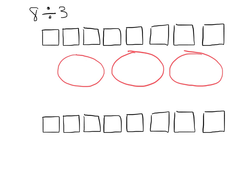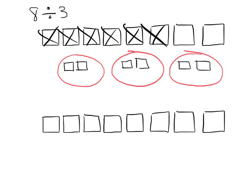And we can see that, first off, we can give each person 2 whole cookies. So that means we've just used up 6 cookies. And then we don't have enough cookies to give each person a whole cookie, so we can cut each one of these into thirds. And then we can see that each person is going to get 2 thirds.